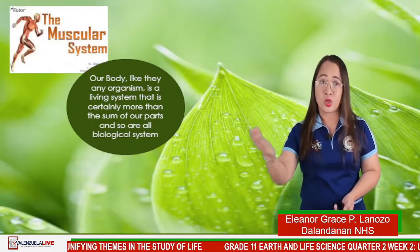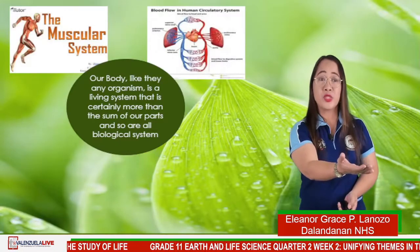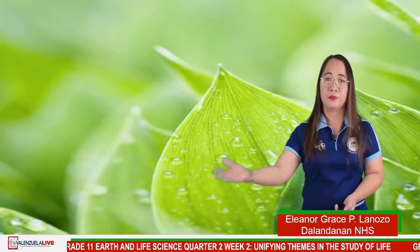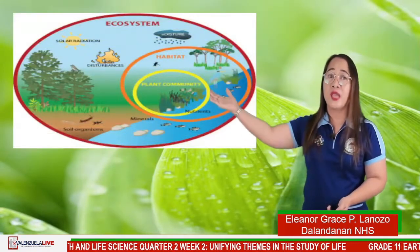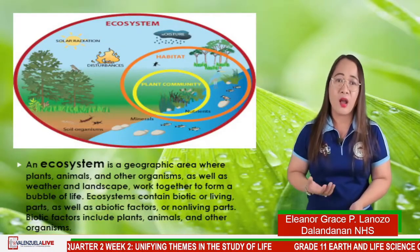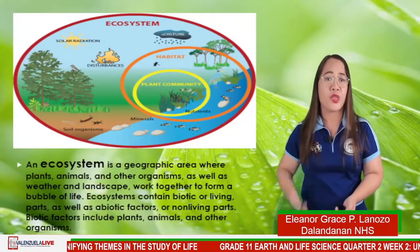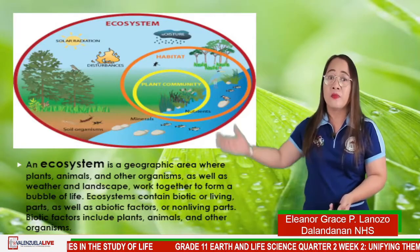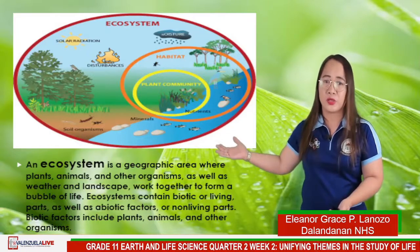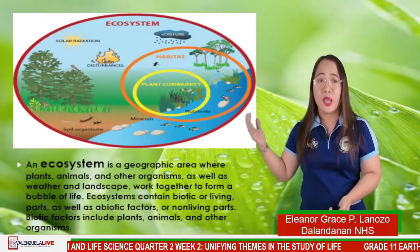We have here the muscular system, the blood flow in the human circulatory system, and we also have the digestive system. And we also have what we call the ecosystem — a geographic area where plants, animals, and other organisms, as well as weather and landscape, work together. The ecosystem includes biotic living parts as well as abiotic factors, or non-living parts. Biotic factors include plants, animals, and other organisms.